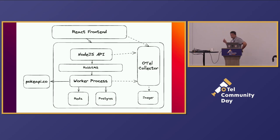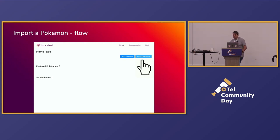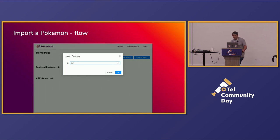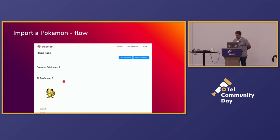All of this — the front-end and the two services — are all sending OpenTelemetry information to the collector, and we're storing that at Jaeger. The app, if you launch it, you can click the import button, enter an ID, and it should add a Pokémon. That's the flow we're going to troubleshoot with our test in a second.